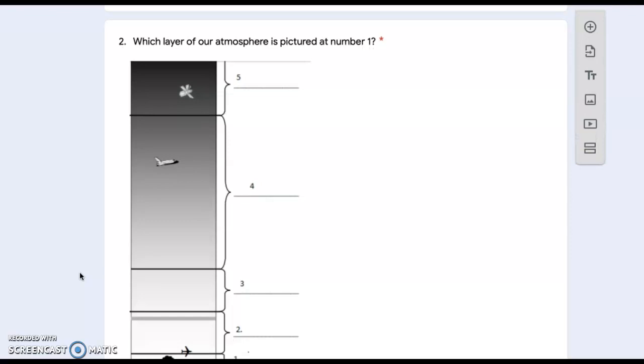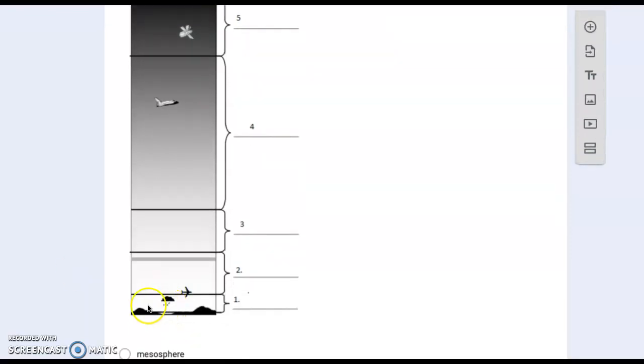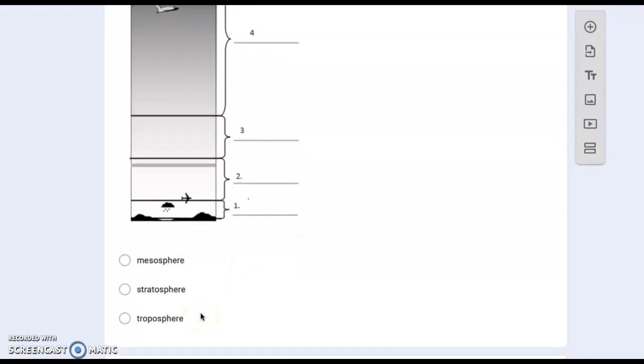Number two: which layer of our atmosphere is pictured at number one, which is the layer closest to Earth, right here? The mesosphere, the stratosphere, or the troposphere?